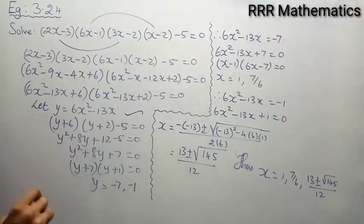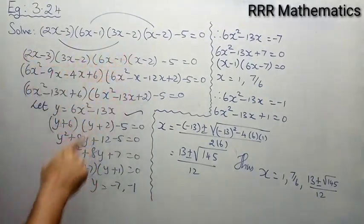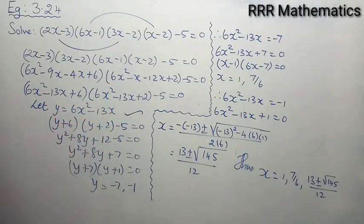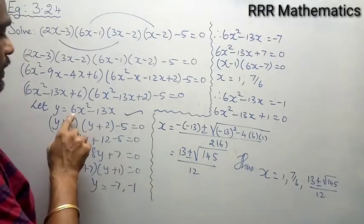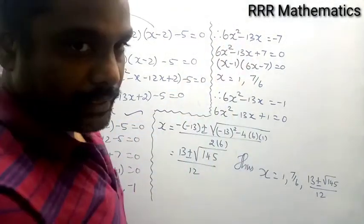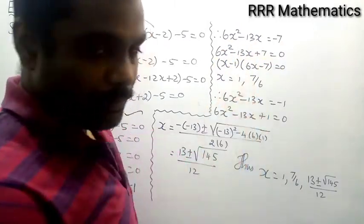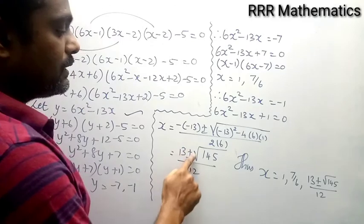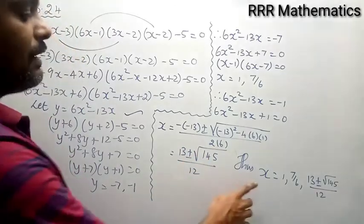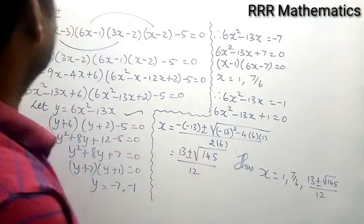The degree of the given equation is 4, so it has 4 values of x. The complete solution is: x = 1, x = 7/6, x = (13 + √145)/12, and x = (13 - √145)/12. By pairing strategically and substituting y = 6x² - 13x, we reduced the problem to a quadratic in y yielding all four roots.